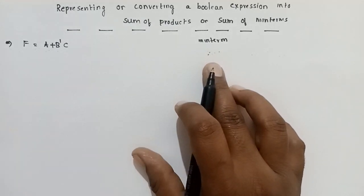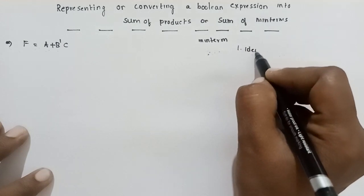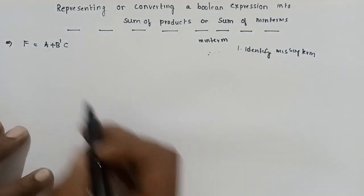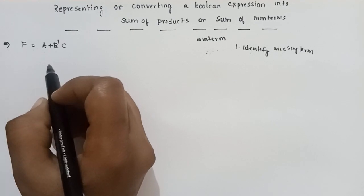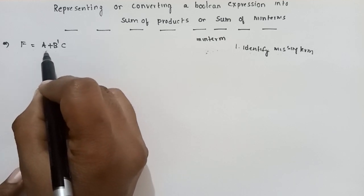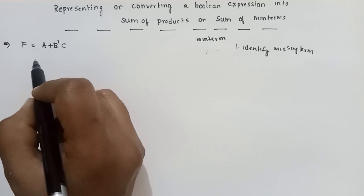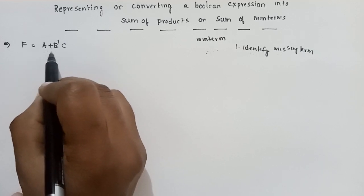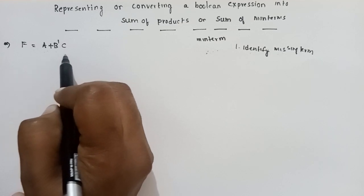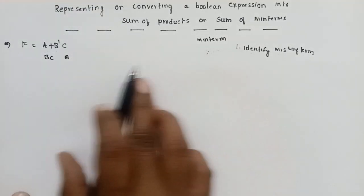In the main terms, I will show you the quality. Then I will show you the process. First step: identify missing terms.